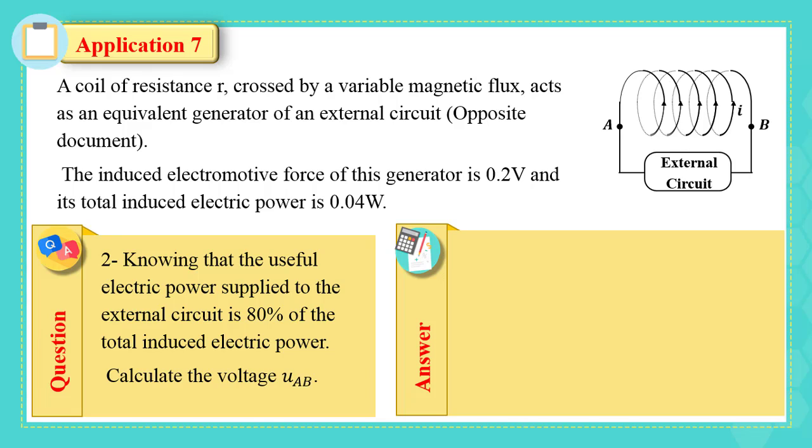2. Knowing that the useful electric power supplied to the external circuit is 80% of the total induced electric power, calculate the voltage UAB. P useful equals 80% of the electric power, which equals 0.8 times 0.04, equals 0.032 watt.